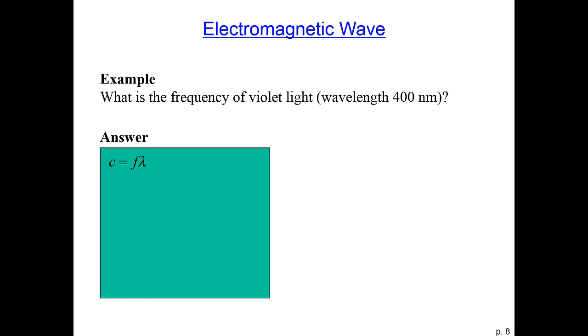We have one more quick question to do. We want to know what is the frequency of violet light. Violet light has a wavelength of about 400 nanometers, and we know that the speed of light is 3 times 10 to the 8 meters per second, so we can use this to solve for the frequency. The velocity of a wave, in this case c, the speed of light, is equal to the frequency times the wavelength.